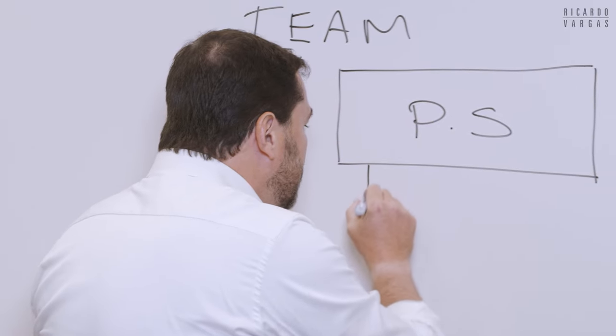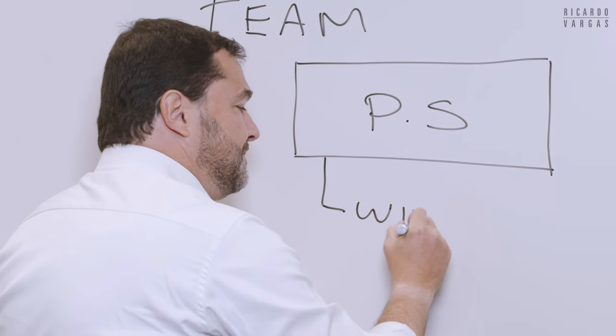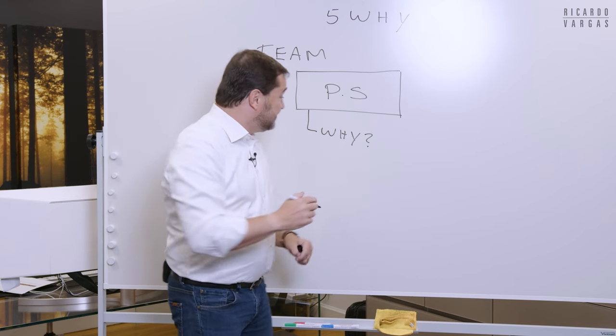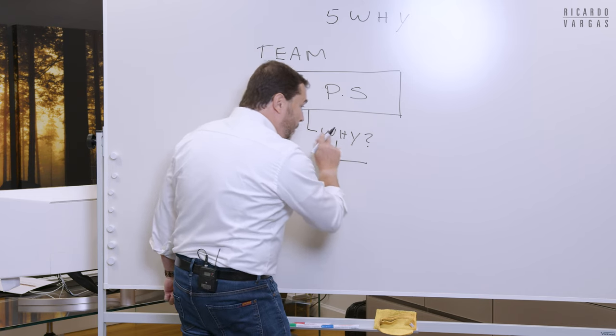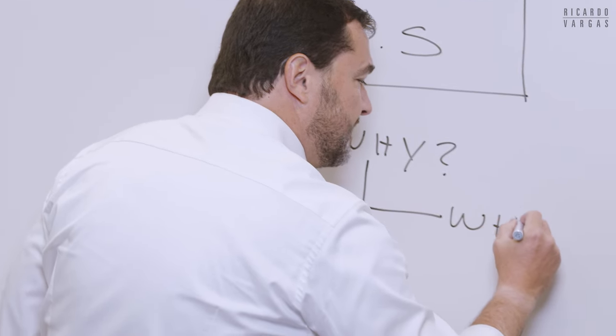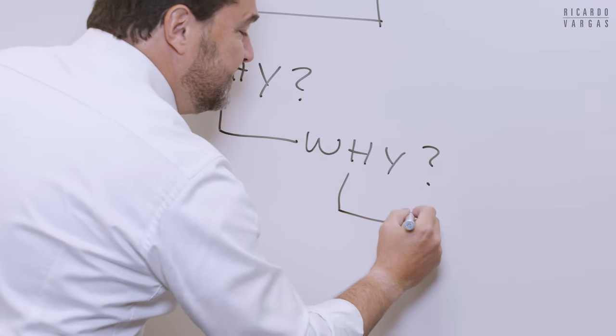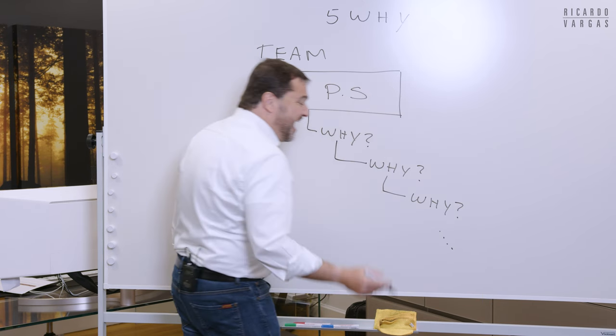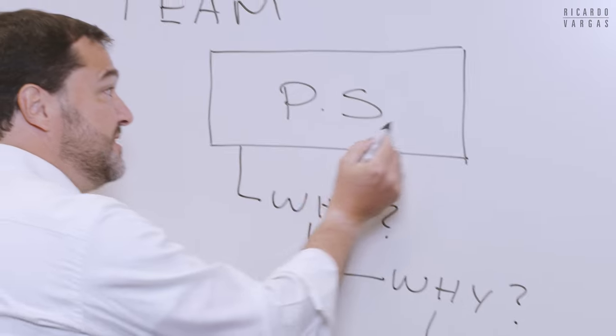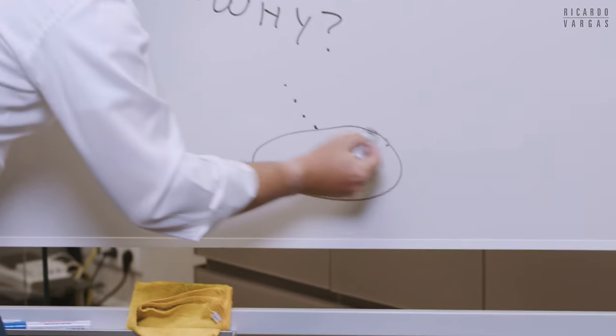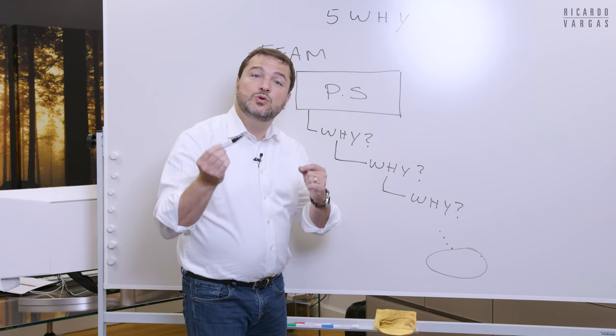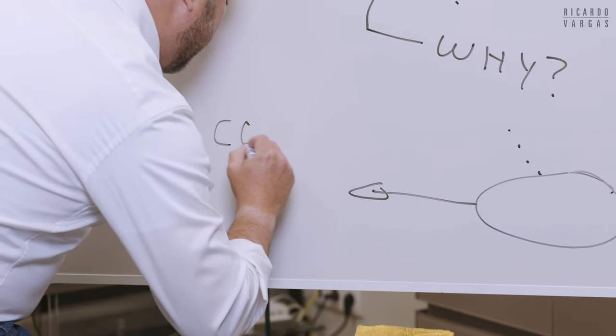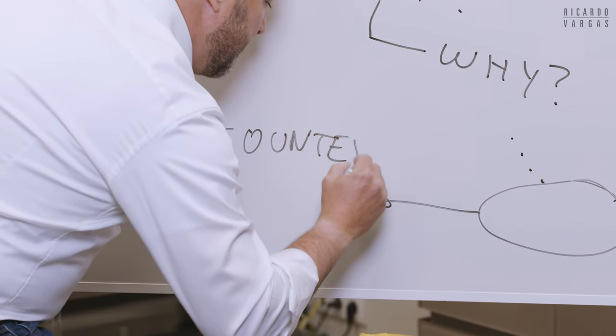After that, you will ask why this problem exists. After that, you will go again and ask why this why. And then you go this up to 5 times. And then it's expected that from this you will come to something that is more concrete for you to answer. And then you will propose a counter measure.